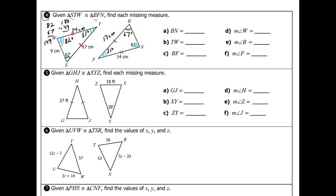And SW is congruent to BN — both get three marks — so since WS is 9 centimeters, BN is also 9 centimeters. Now filling in the answers: segment BN is 9 cm, segment TW is 14 cm, segment BF is 17 cm, angle W is 82°, angle B is 67°, and angle F is 31°.